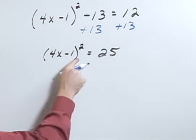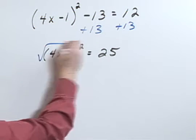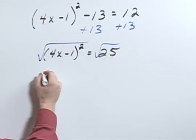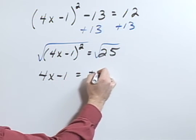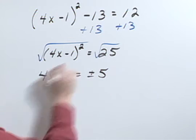Next, I can get rid of the quantity squared by taking the square root of both sides of the equation. So 4x minus 1 equals positive or negative 5.